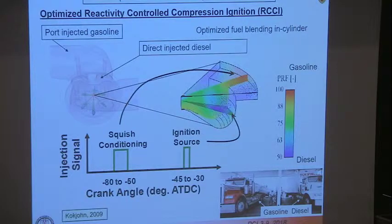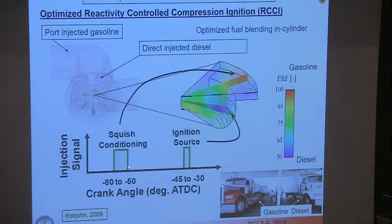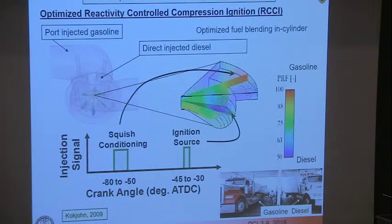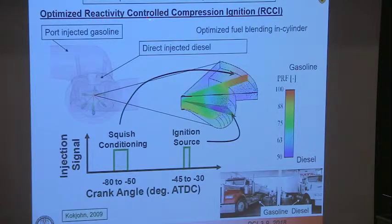The genetic algorithm pointed to port-injected gasoline with direct-injected diesel in two pulses. The first pulse of diesel aimed at the squish region to control the PRF number there, and a second injection later into the bowl which serves as the ignition site. There are a huge number of parameters to explore for different operating regimes — injection count, timing, duration, and the amount of diesel versus gasoline fuel. This is the concept of controlling reactivity everywhere in the combustion chamber using this blending strategy, which we called reactivity controlled compression ignition, or RCCI.